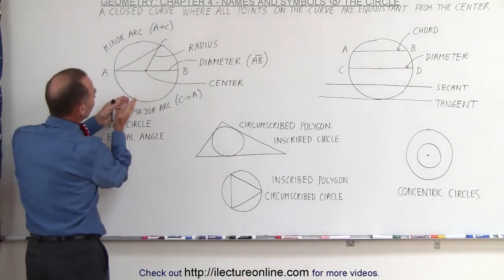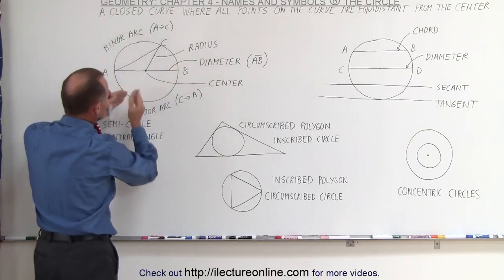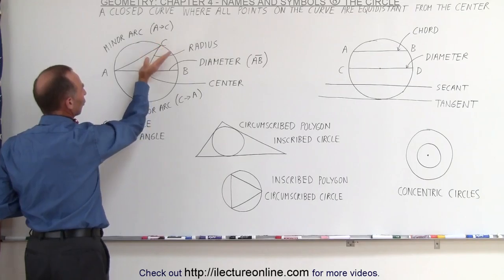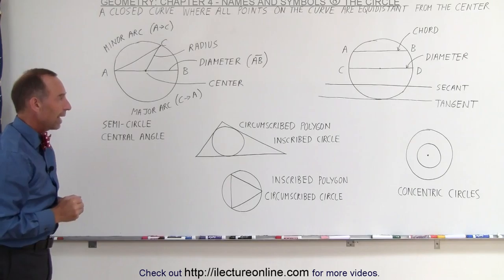If you start from a different point, let's say from the edge of the circle, you draw two lines like this, that is not called a central angle. It has to be from the center to the edge of the circle, so the angle between two radii is called the central angle.